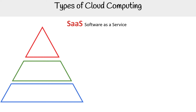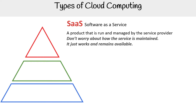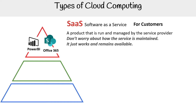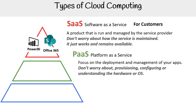Starting at the top of our pyramid is Software as a Service. It's a product that is run and managed by a service provider, so you do not worry about how the service is maintained — it just works and remains available. This is specifically designed for customers, so it'll be Microsoft-based services like Power BI or the Office 365 suite.